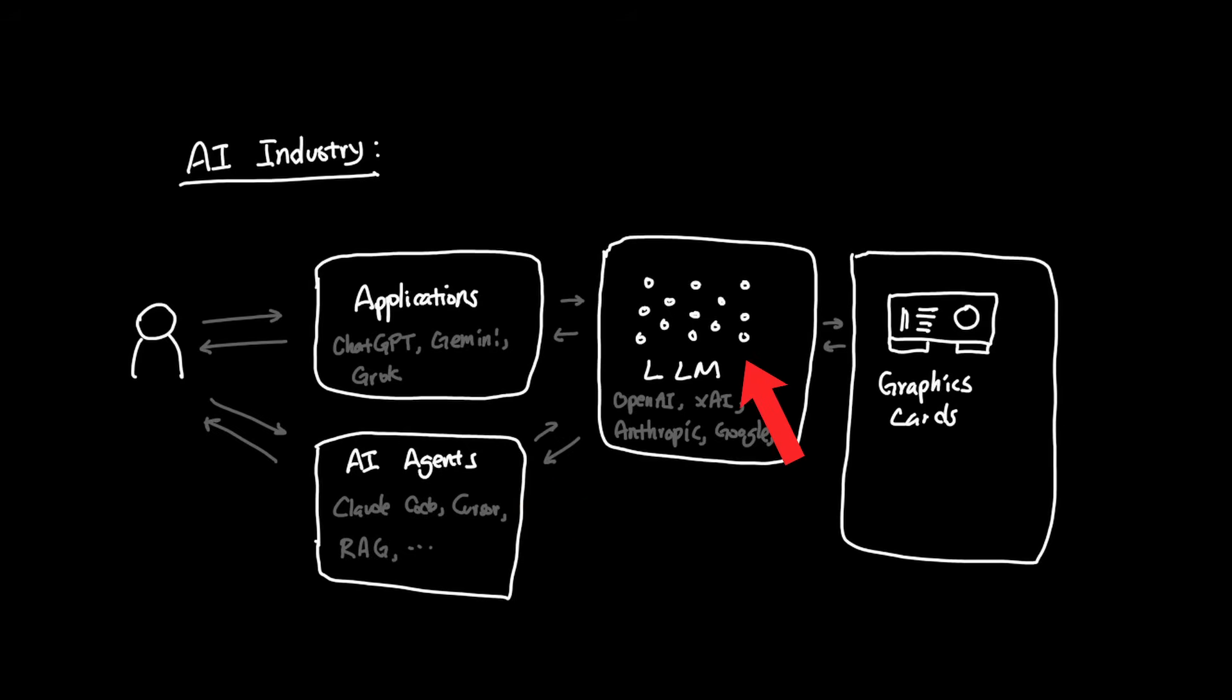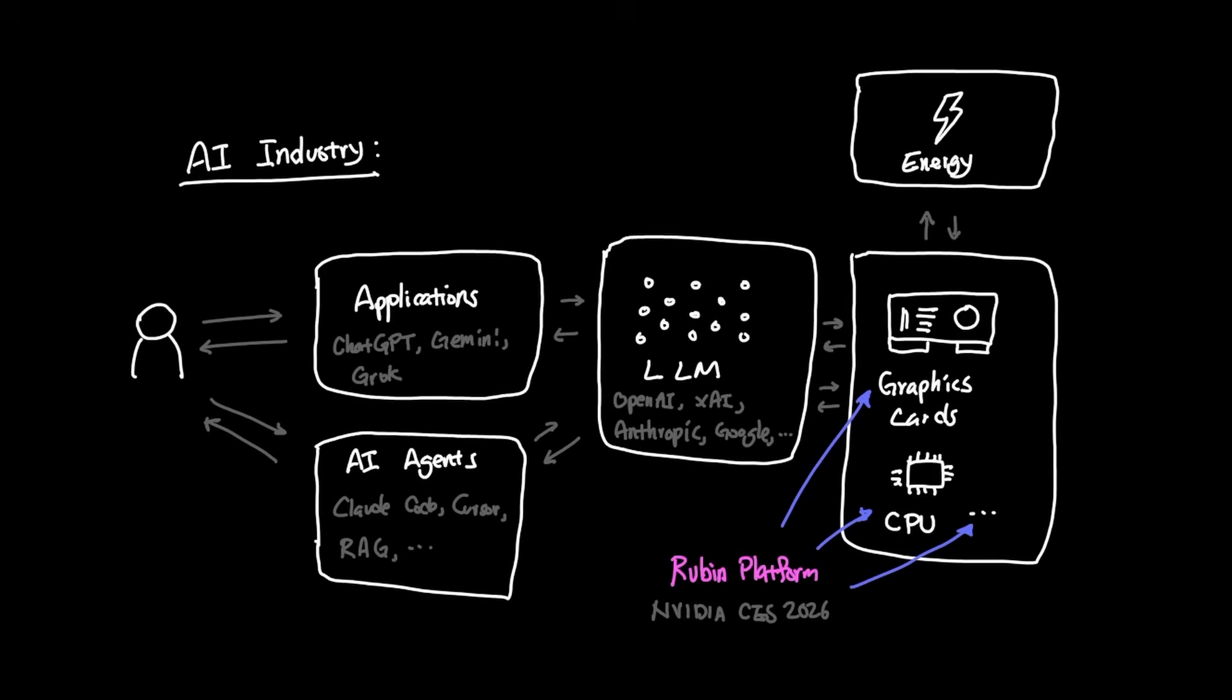And AI agents that use LLMs also rely on graphics cards and a good CPU to orchestrate the entire process. And finally, we have data centers that house these graphics cards and they need constant source of energy. So when we talk about the Rubin platform from NVIDIA CES 2026, it's this layer that we're talking about. And you might be thinking, this is just a small piece in the system.